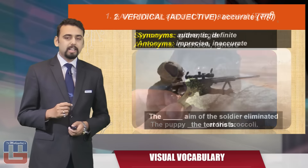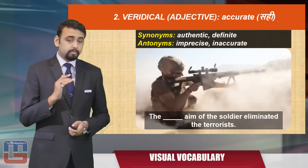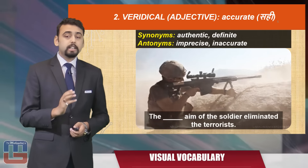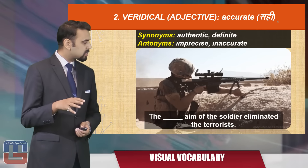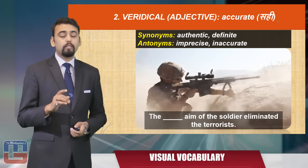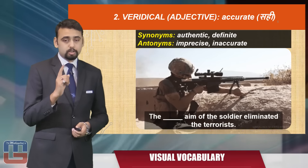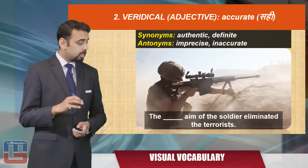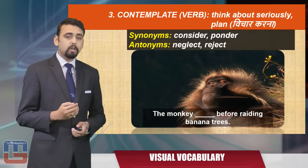The next word is 'vertical,' an adjective meaning accurate. The synonyms are 'authentic' or 'definite,' and the antonyms are 'imprecise' or 'inaccurate.' Here's an image — the accurate aim of the soldier eliminated the terrorist. Using 'vertical,' the sentence becomes: 'The vertical aim of the soldier eliminated the terrorist.'